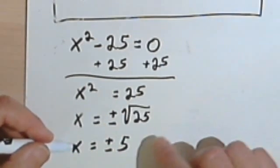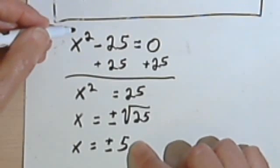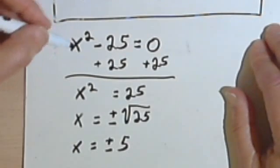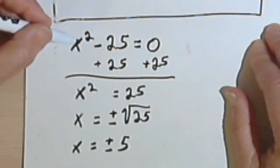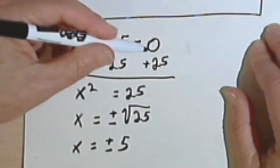And if you plug both plus and minus 5 back into the original, you'll find they balance either way. So 5 squared is 25, minus 25 is 0. Negative 5 squared is 25, minus 25 is 0.